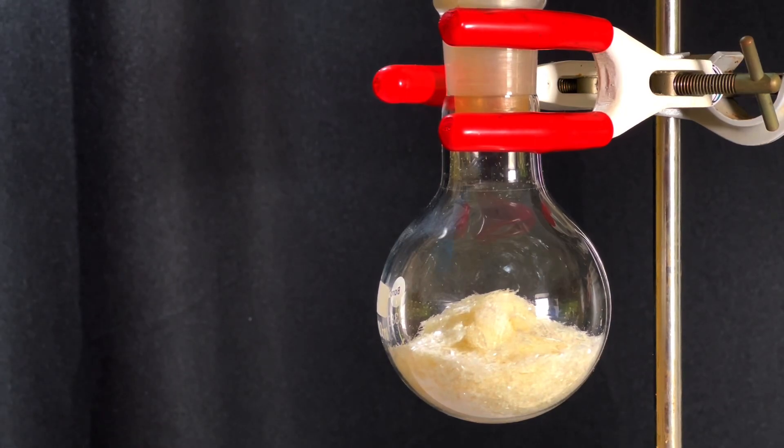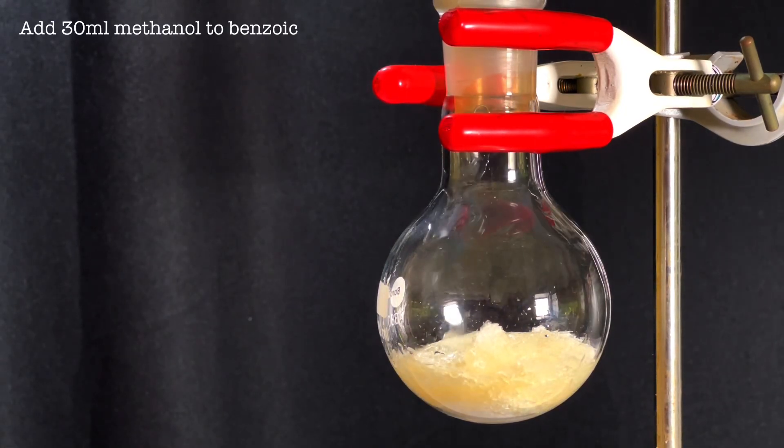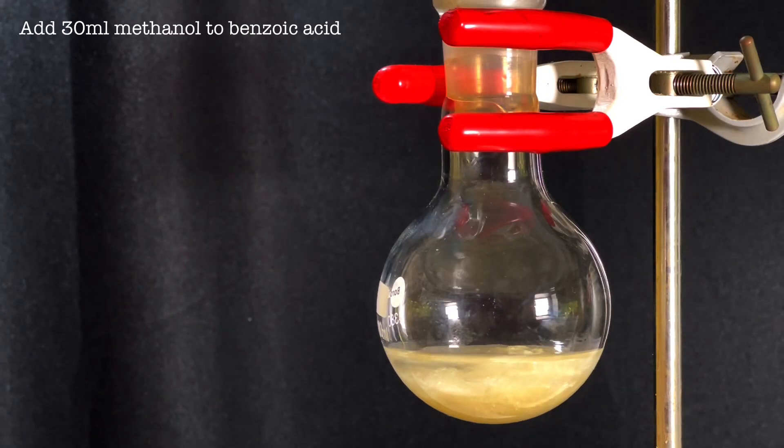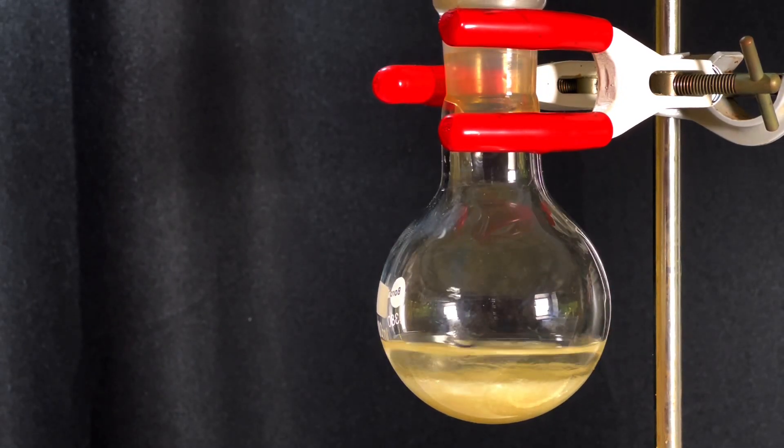Next add 30 milliliters of 99% methanol. Benzoic acid is extremely soluble in methanol and here you see most of it has dissolved.